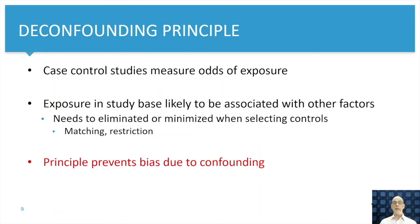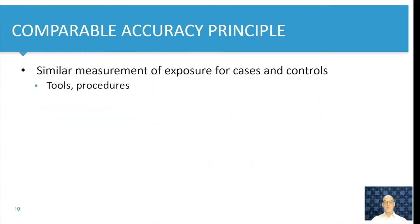Taking care of the de-confounding principle prevents bias due to confounding. And the third principle is the comparable accuracy principle. You have to measure exposure exactly the same way in cases and controls. The same tools, the same procedures. And this seems very logical, but it is not always easy.